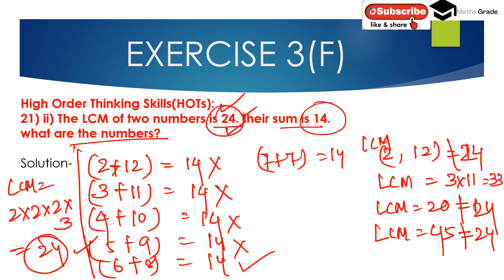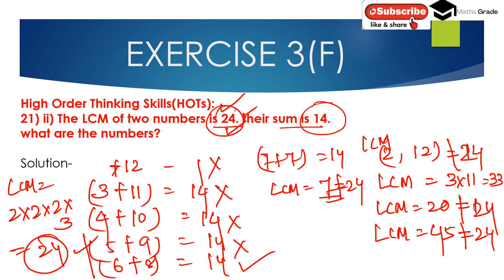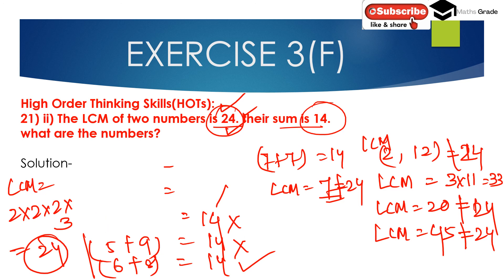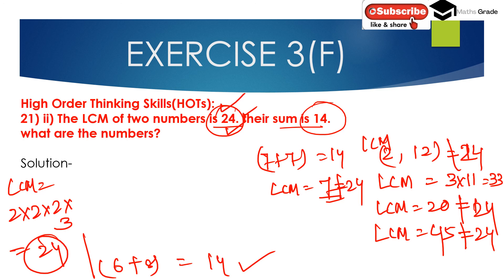We also check 7 and 7: LCM of 7 and 7 is 7, which is not equal to 24 — so that's incorrect. Therefore the numbers that satisfy LCM equals 24 and sum equals 14 are 6 and 8, since 6 plus 8 equals 14 and LCM of 6 and 8 is 24.